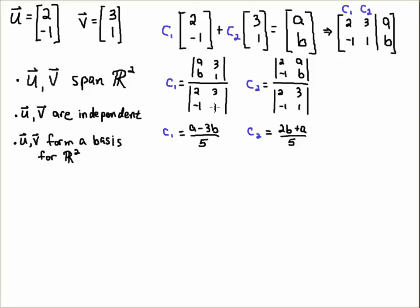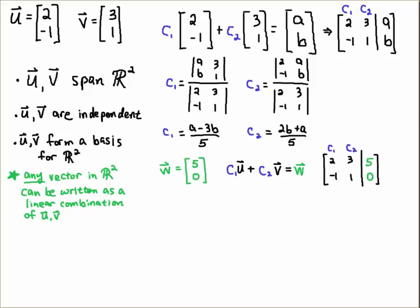So that means if I have u, v span R² and u, v are independent, they can form what we call a basis. That means whenever you see the word basis, think building block. It means that these vectors can act as bricks to build R². So any vector in R² can be built using these two vectors.